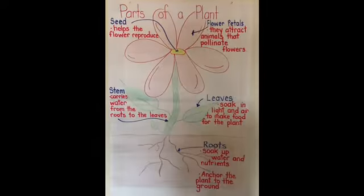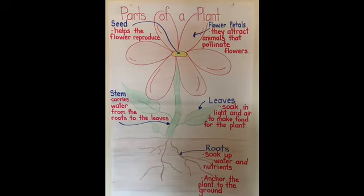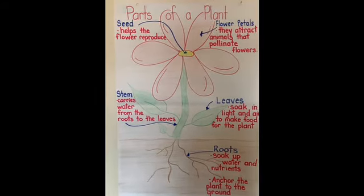Welcome back. Today we're going to talk about the different parts of a plant. There are parts above ground and there are parts below the ground that you can't see. I've drawn us a chart that shows the different parts of a plant.